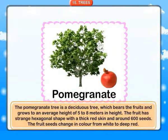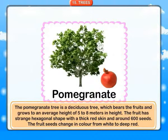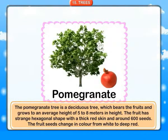The pomegranate tree is a deciduous tree which bears fruits and grows to an average height of 5 to 8 meters. The fruit has a strange hexagonal shape with a thick red skin and around 600 seeds. The fruit seeds change in color from white to deep red.